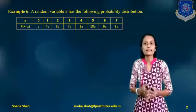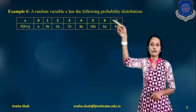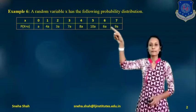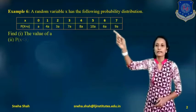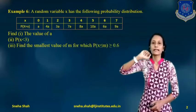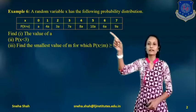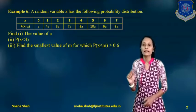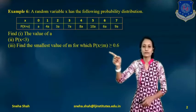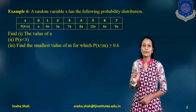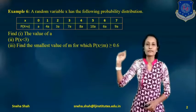When we represent any random variable x along with its probability, this kind of distribution is called a probability distribution. From this probability distribution, you have to find: first, the value of constant a; second, the probability of x less than 3; and third, the smallest value of n for which P(x ≤ n) ≥ 0.6.